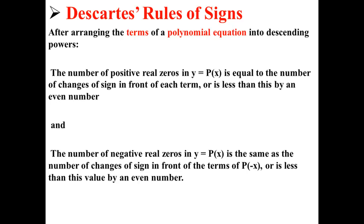Well, according to Descartes' Rule of Signs, after arranging the terms of a polynomial equation into descending order, the number of positive real zeros in y equals p of x is equal to the number of changes of sign in front of each term, or is less than this by an even number. And the number of negative real zeros in y equals p of x is the same as the number of changes of sign in front of the terms of p of negative x, or is less than this value by an even number.